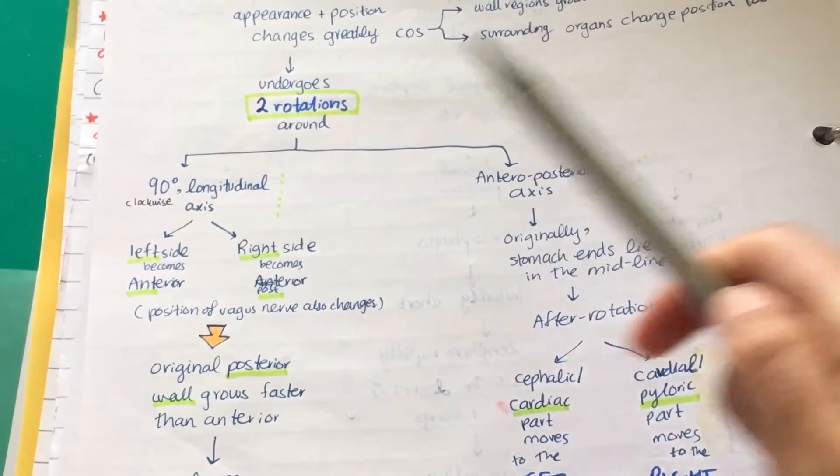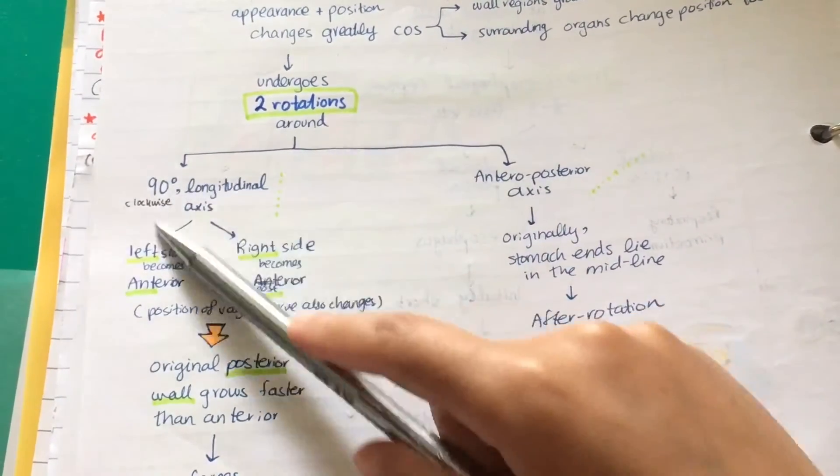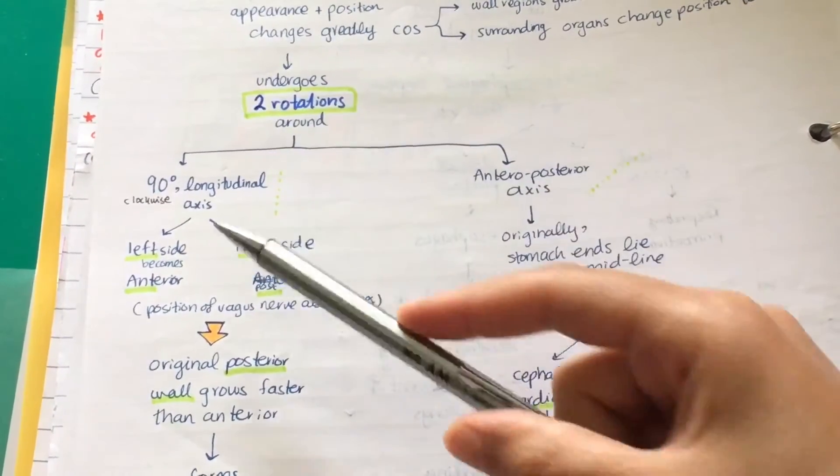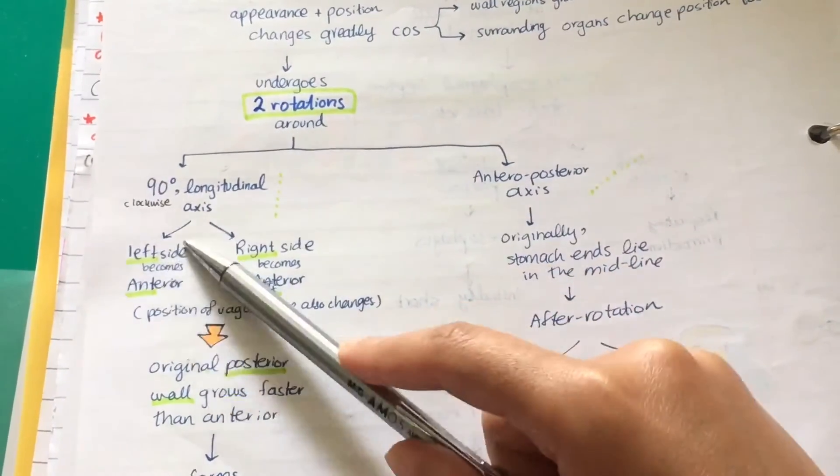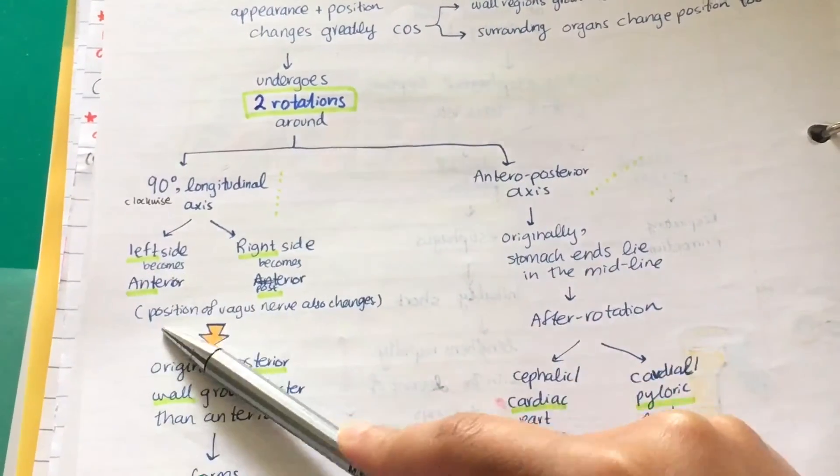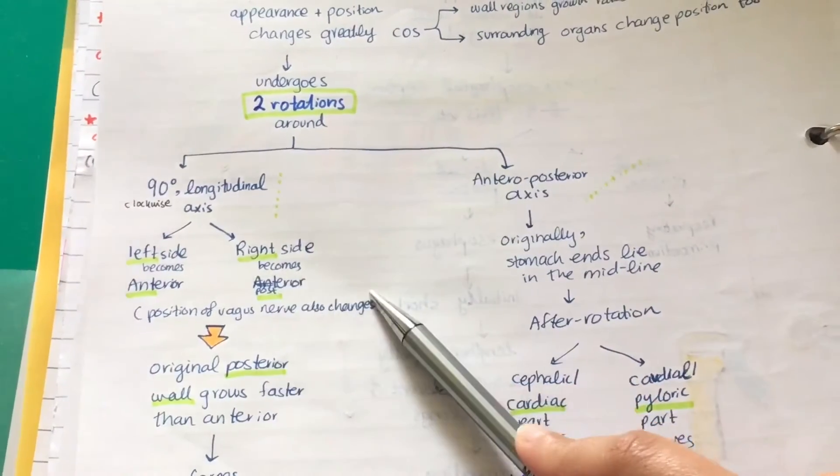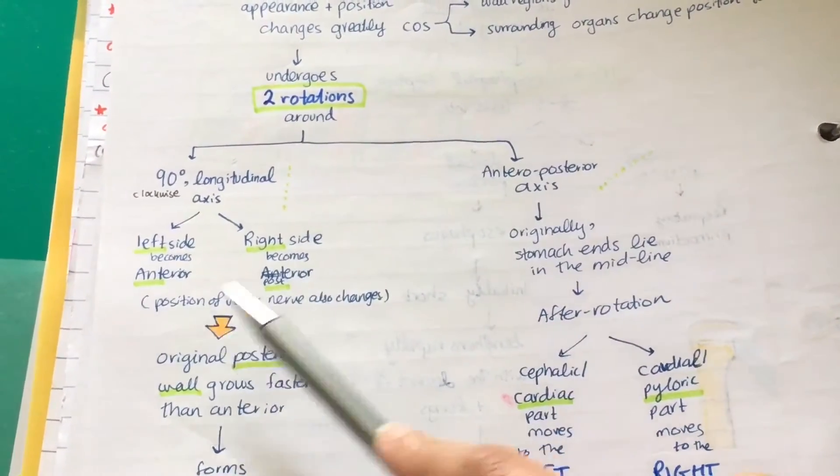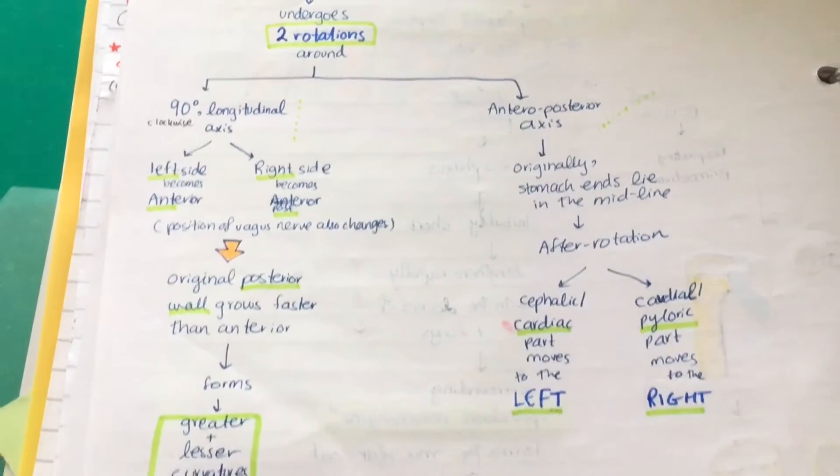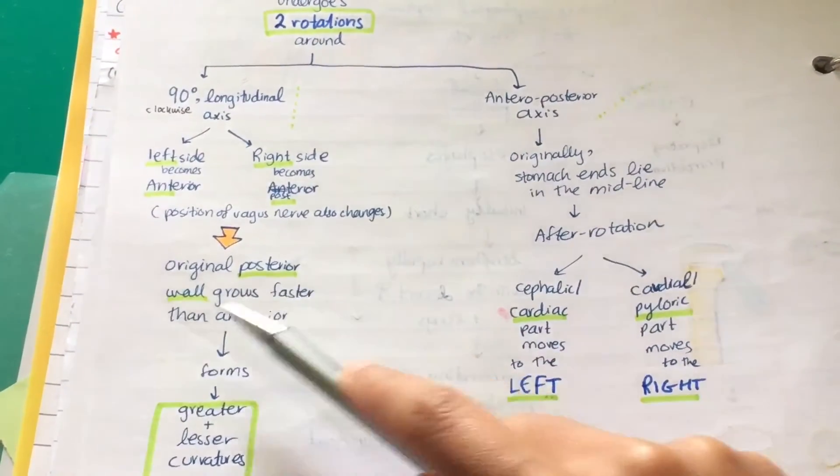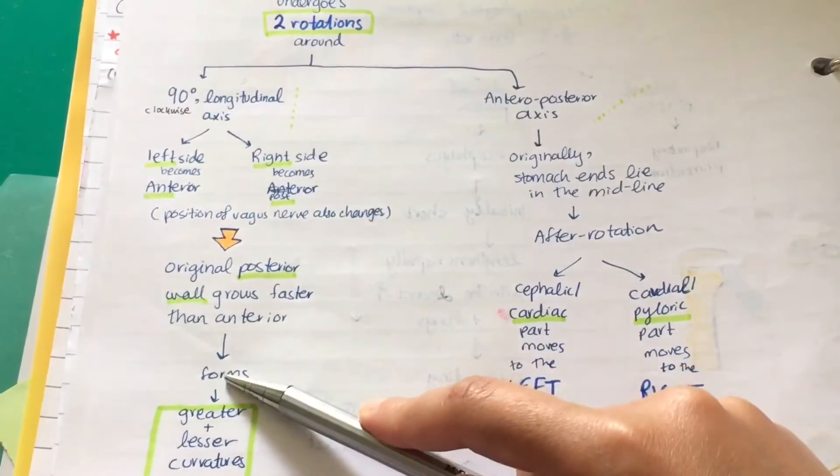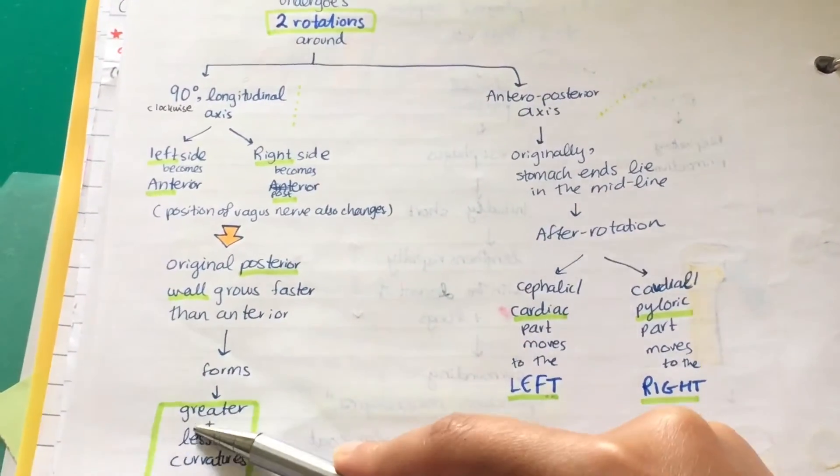The 90-degree rotation causes the left side to become anterior and the right side becomes posterior. The position of the vagus nerve also changes. Now the original posterior wall grows faster than the anterior wall, which leads to the formation of the greater and lesser curvatures.